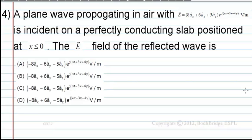Option B is −8ax + 6ay − 5az multiplied by e^(jωt + 3x + 4y) V/m. Option C is −8ax − 6ay − 5az multiplied by e^(jωt − 3x − 4y) V/m. Option D is −8ax + 6ay − 5az multiplied by e^(jωt − 3x − 4y) V/m.